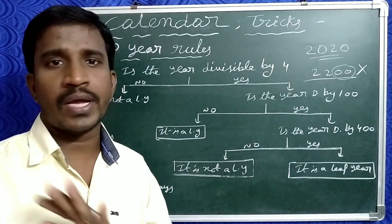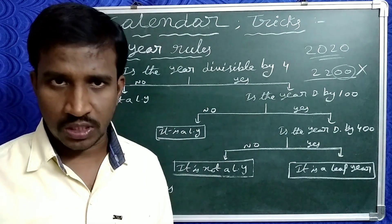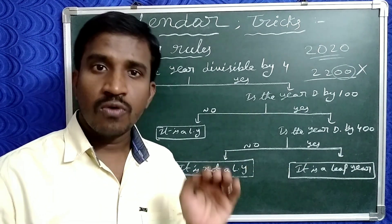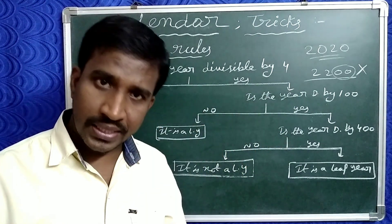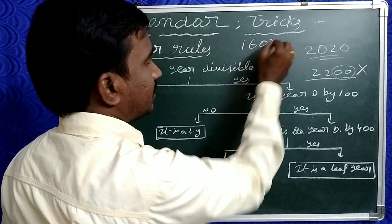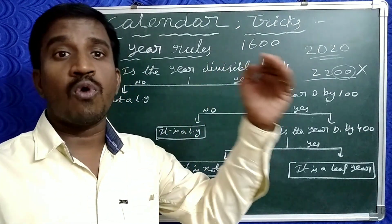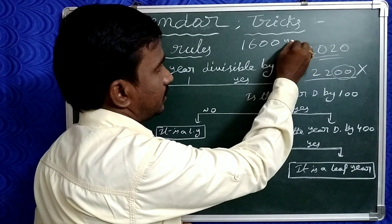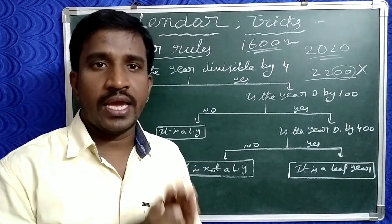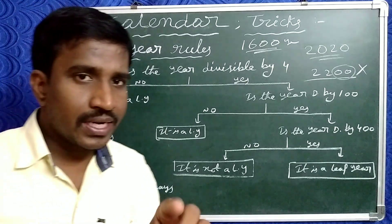So the rule is: multiples of 100 are not leap years, but multiples of 400 are leap years. For example, 1600 is divisible by both 100 and 400, so 1600 is a leap year. So 100 multiples are not leap years, but 400 multiples are leap years.